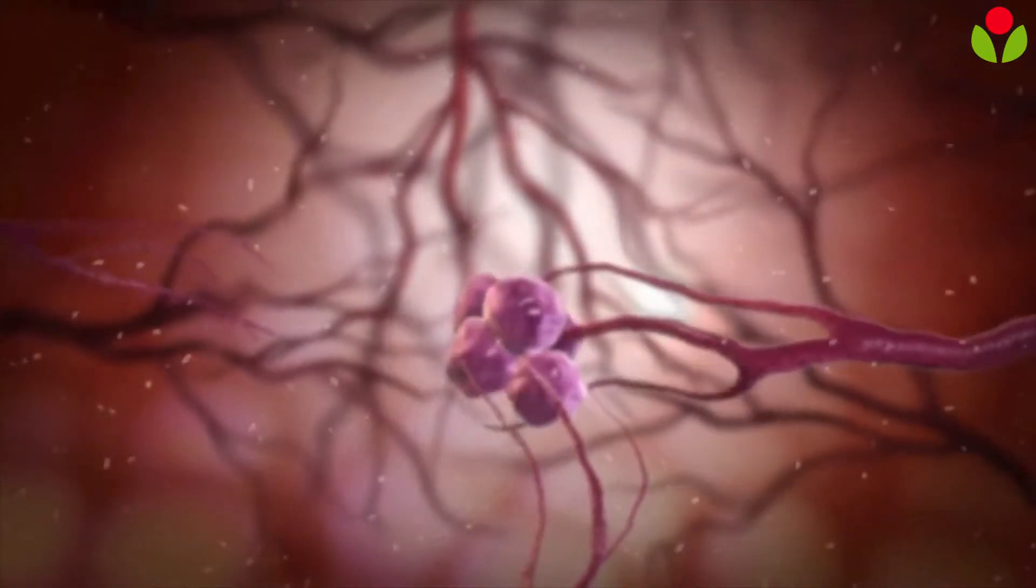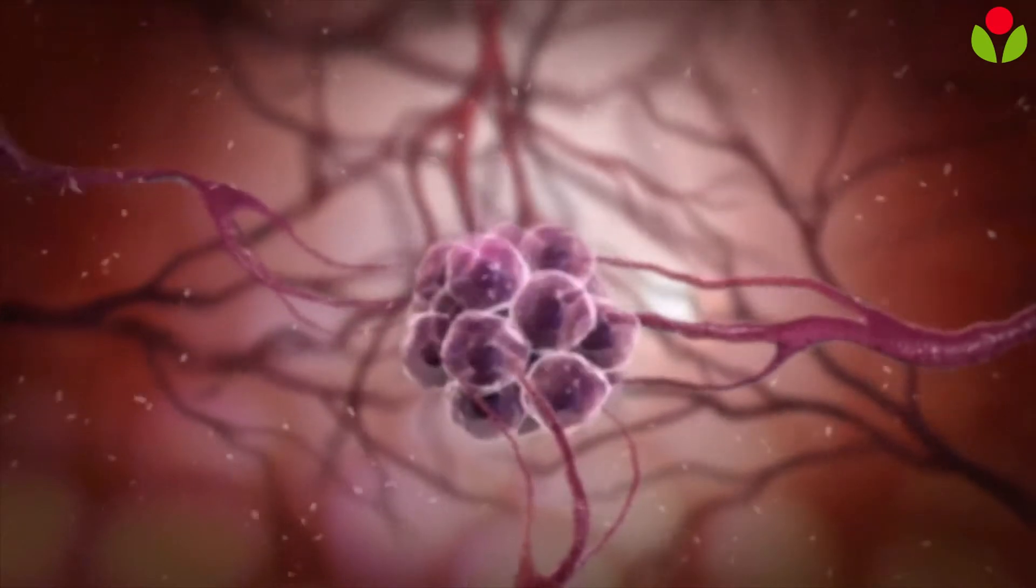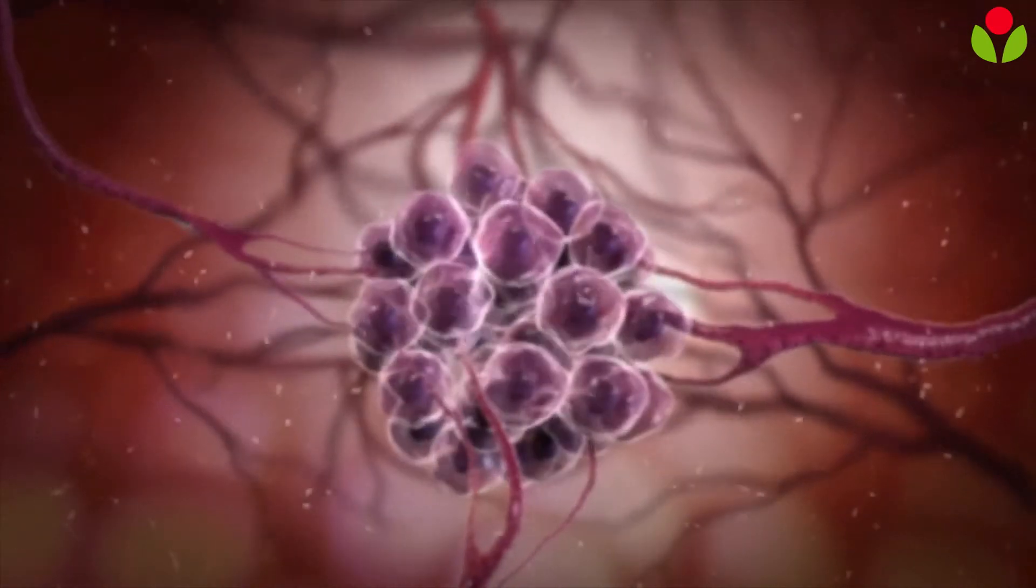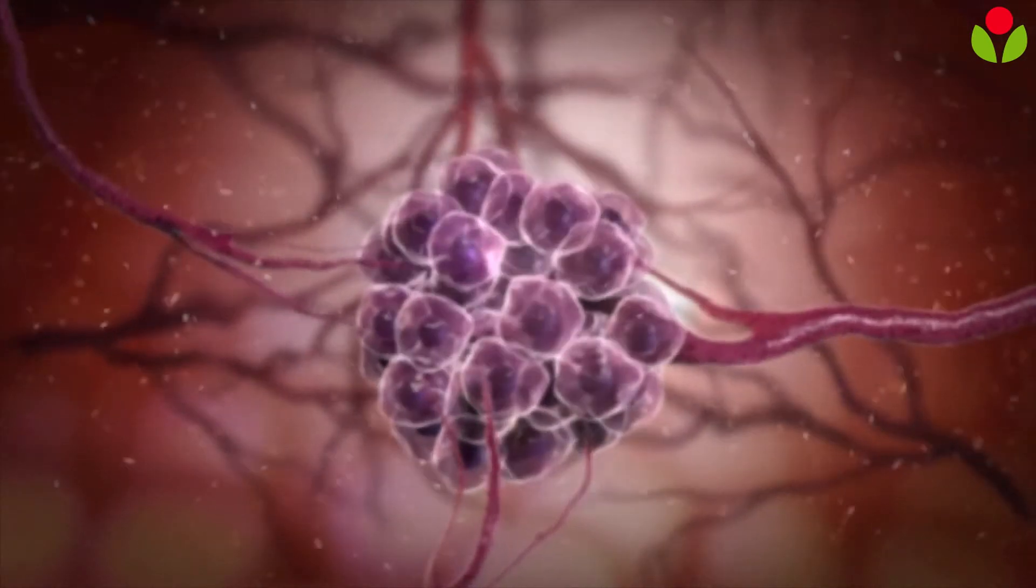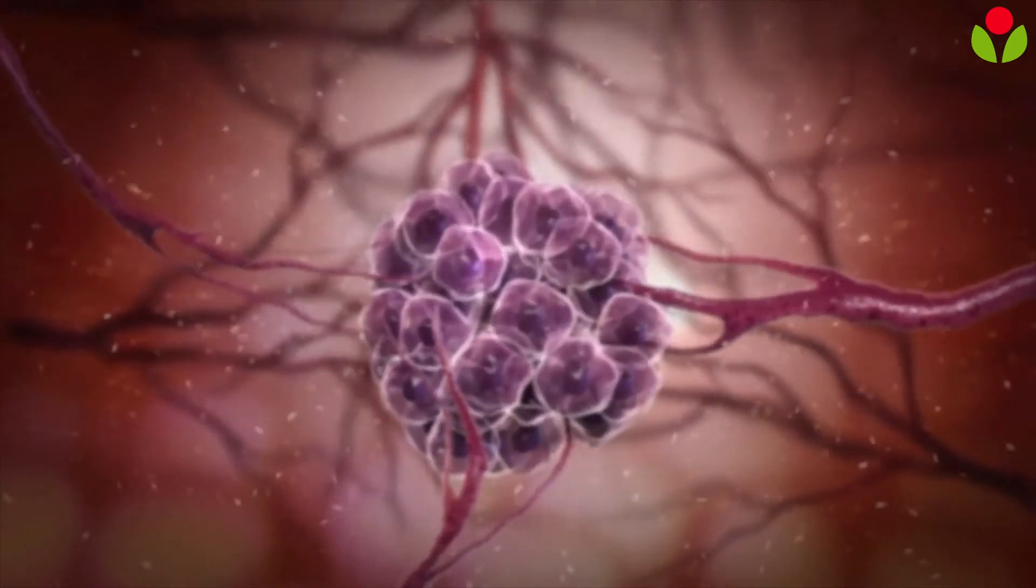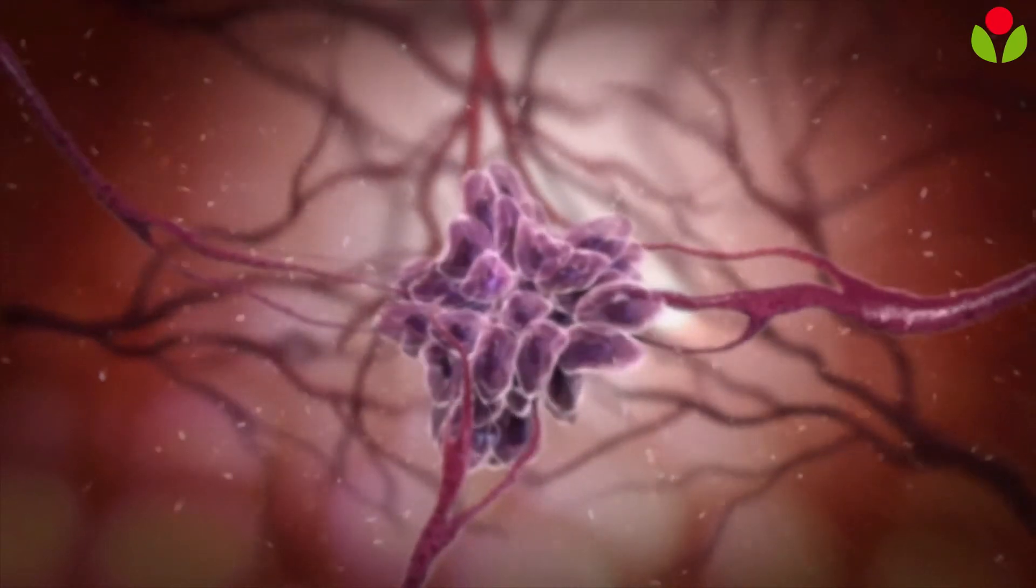Cancers are formed when abnormal cells divide rapidly without any control. Because chemotherapy drugs target different steps during the process of cell division, they are good at killing cells that are dividing rapidly like cancer cells.